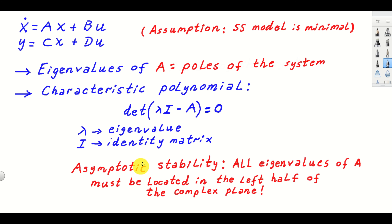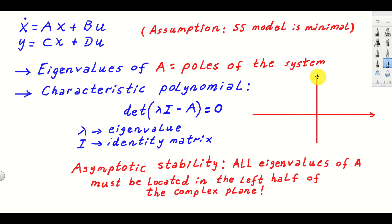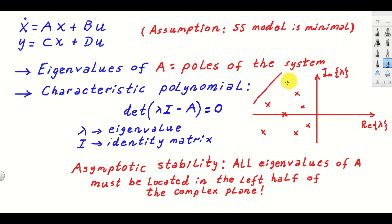For asymptotic stability, we inspect the locations of the eigenvalues of matrix A. All eigenvalues of A must be located in the left half of the complex plane. In other words, if an eigenvalue is a complex number with real and imaginary parts, the real part must be strictly smaller than zero — that is, all eigenvalues must lie strictly in the left half of the complex plane.